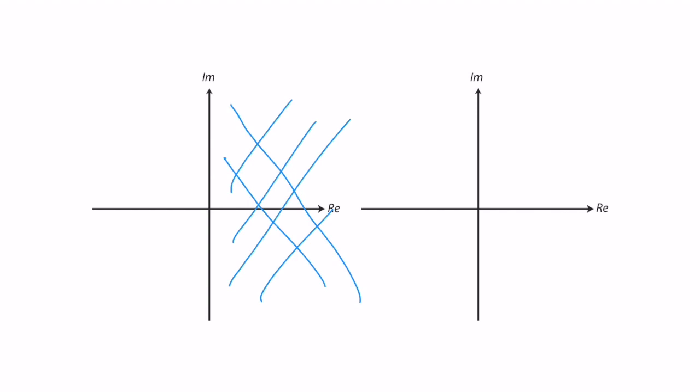Let's assume it's a first-order system and we have a pole at some location. Associated with this pole, we have a settling time or other performance metrics. If we move this pole further into the left-half plane, settling time will decrease, which means the system will become faster and, in terms of closed-loop performance, more stable. So this is one way of looking at stability.